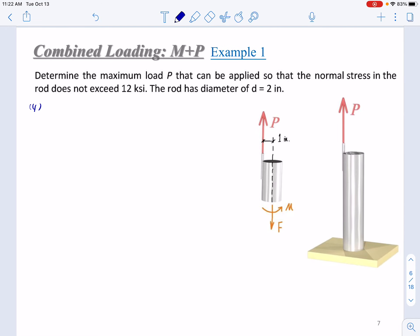So the last step, the maximum stress will be P over 3.14 plus P over 0.785. This will be 1.592 P, not higher than 12 ksi, so 12,000 psi. Well, the P will be no larger than 7540 pounds. This is the final result.